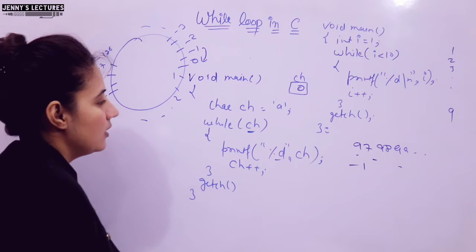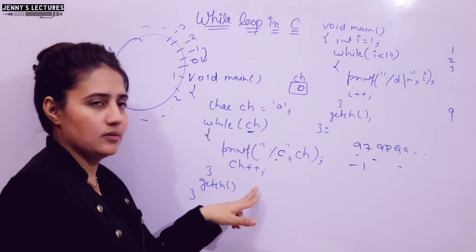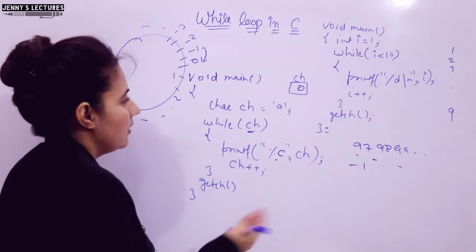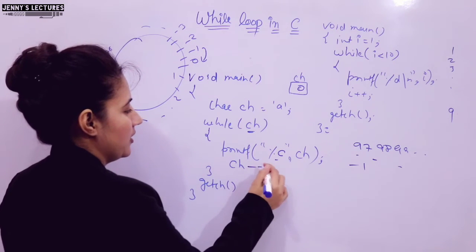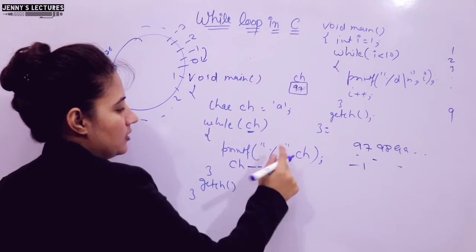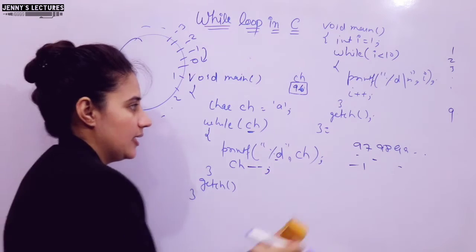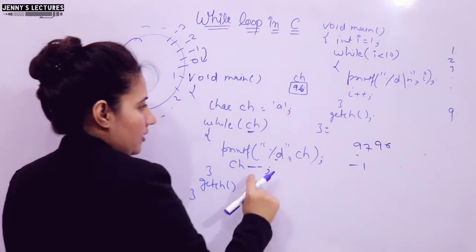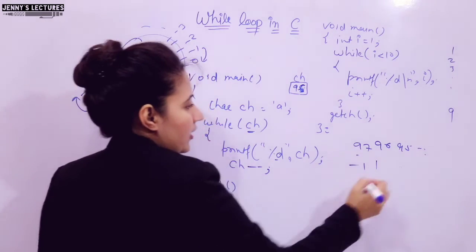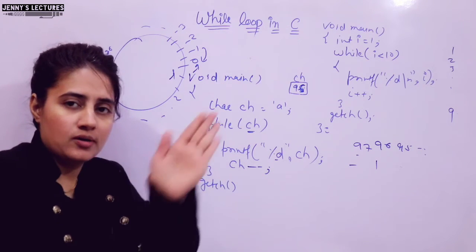This is your assignment: if you use `%c` instead of `%d`, tell me in the comments what output you get. Also, you can use `ch--` instead of `ch++`. Starting from `ch = 'a'` (97), it prints 97, then 96, 95, and so on down to 1. When `ch--` makes the value 0, the condition becomes false and the loop ends. So it prints from 97 down to 1 in reverse order.